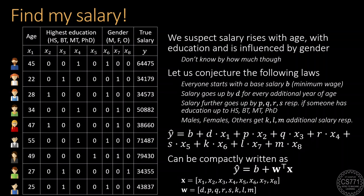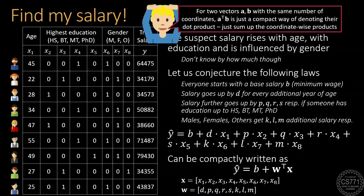This same expression can be written much more compactly by taking all the feature values of a user and collecting them into a vector, let's say X, as well as taking all these unknowns, B, P, Q, R, S, K, L, M and D and collecting them into a separate vector, let's say W. In case you have not seen this notation before, for two vectors, A and B which have the same number of coordinates, A transpose B is just a compact way of writing their dot product which is just the sum of their coordinate-wise products.